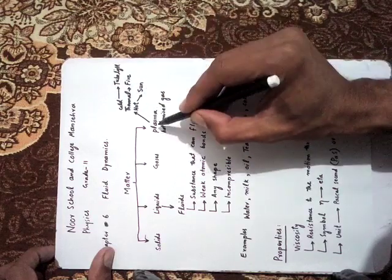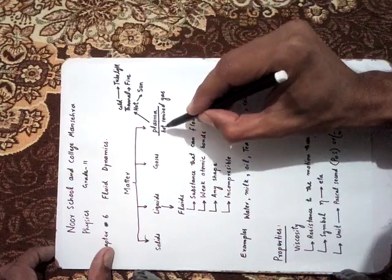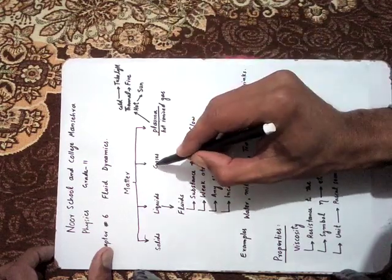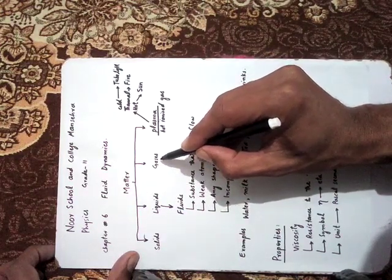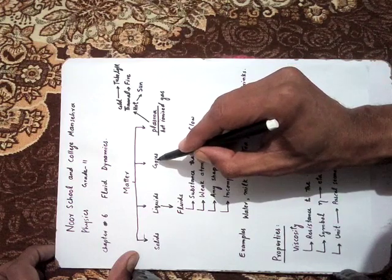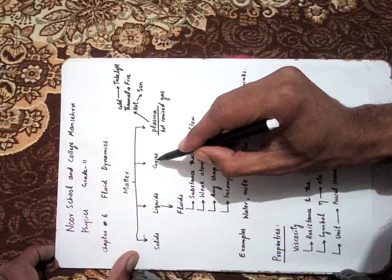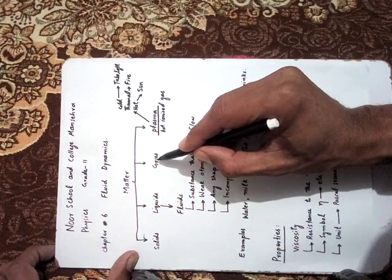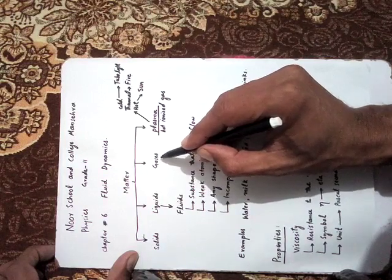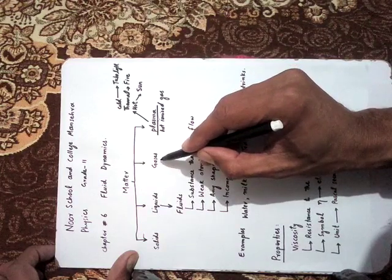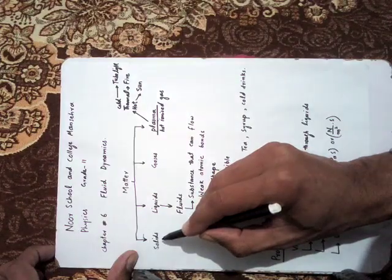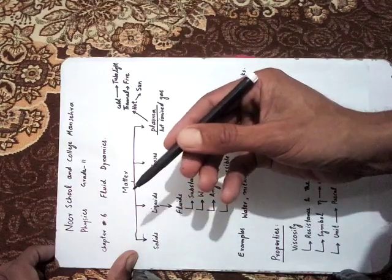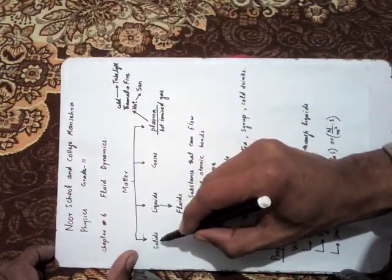Plasma is hot ionized gas. A gas is the state of matter with no particular shape, and atoms are very far from each other. Examples of gases are oxygen, nitrogen, chlorine, carbon dioxide, and our atmosphere around the earth is a gas. Examples of solids are stone, wood, paper, and all hard objects. In solids, the atoms are packed very close to each other.